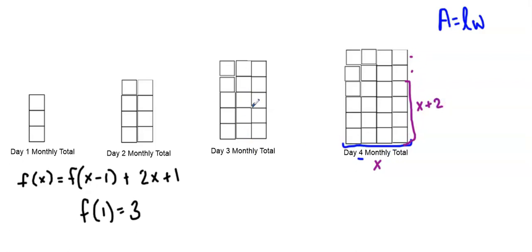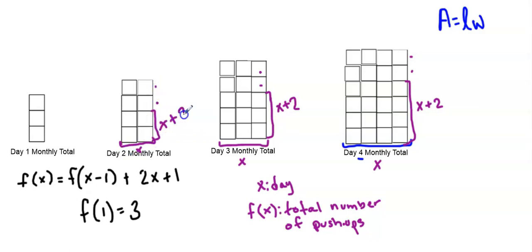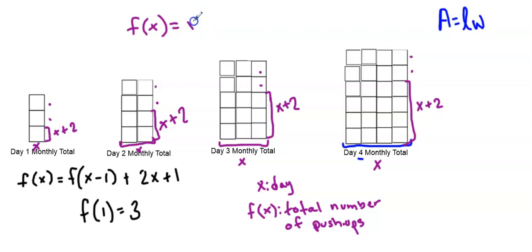So if my day number is x, one dimension of the rectangle is x and the other is x + 2. I need to make sure this works for the other rectangles — and it does. For day three, one dimension is x (which is 3) and the other is x + 2. For day two, x is 2 and the height is x + 2. Same thing for day one: width x and height x + 2. This means my explicit equation, using the area formula, is f(x) = x(x + 2).